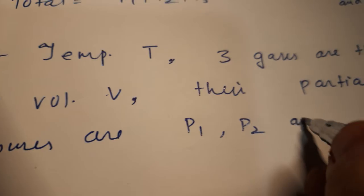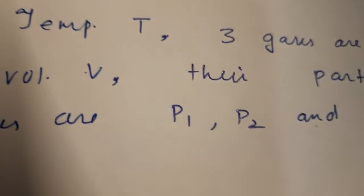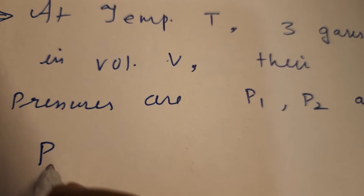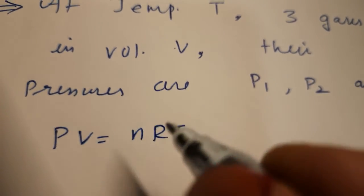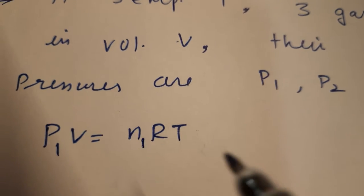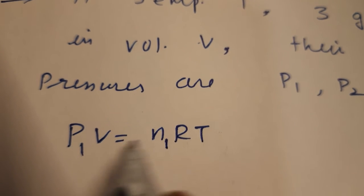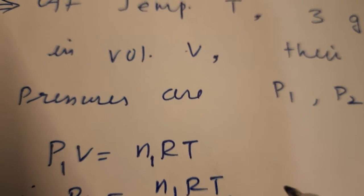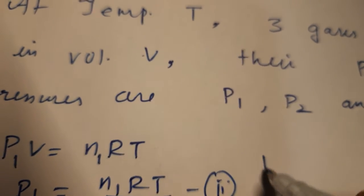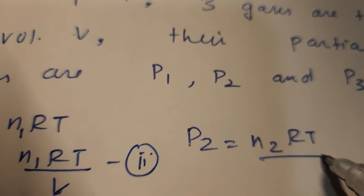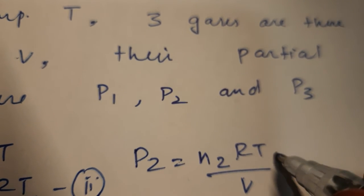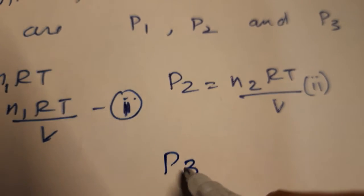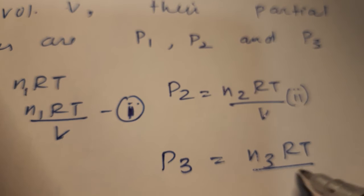Suppose at temperature T, three gases are present in volume V, with partial pressures P1, P2, and P3. Using PV = nRT, we can write: P1 equals n1·RT upon V (first equation), P2 equals n2·RT upon V (second equation), and P3 equals n3·RT upon V (third equation).